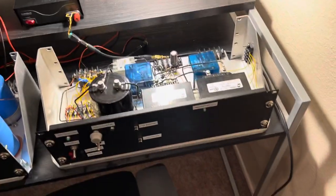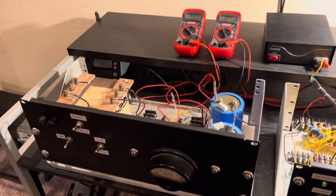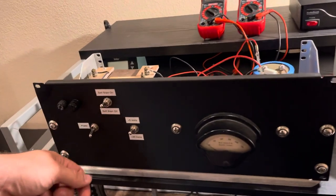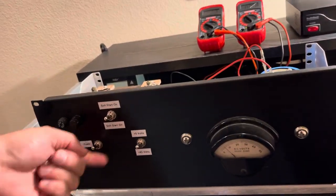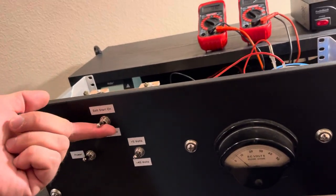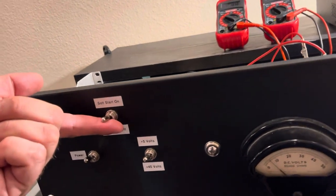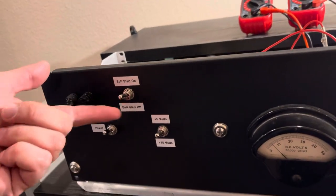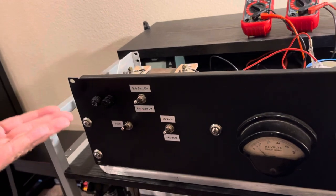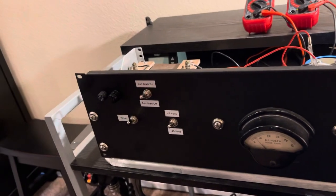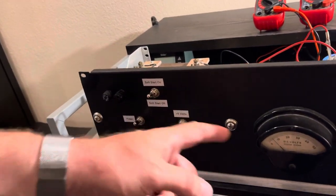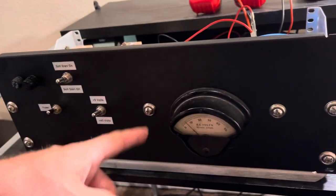On the front you turn it on here, simple as that. It has a soft start circuit for the 45 volts to limit the inrush of current when you're charging the capacitors. This little antique meter here shows you the voltages.